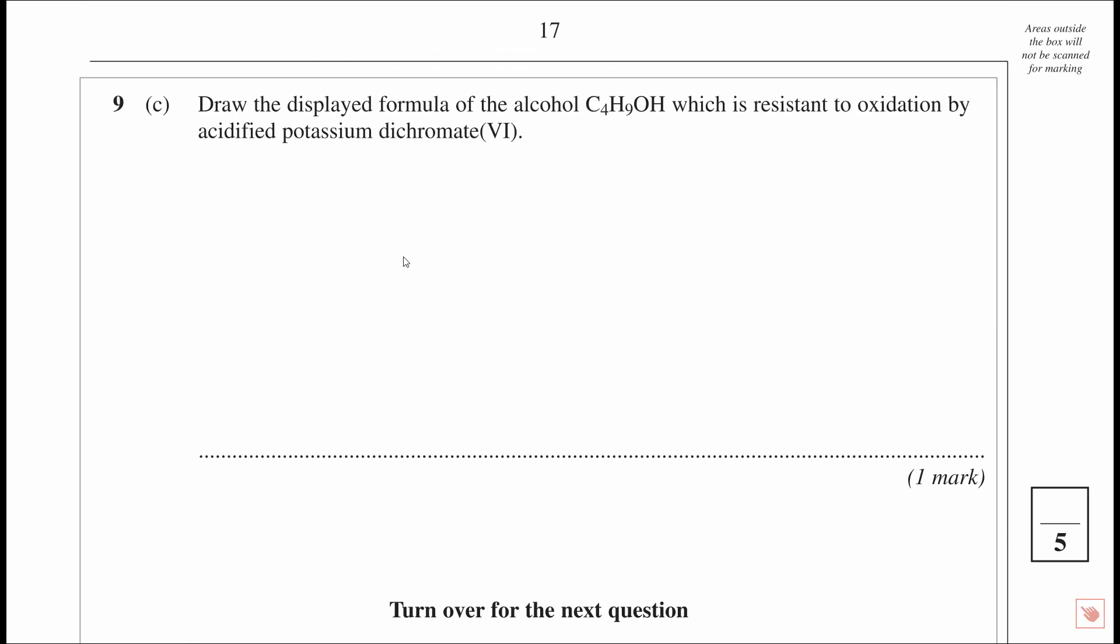I want to go on to this one. Draw the displayed formula - displayed very important, must do OH like that - draw the displayed formula of the alcohol C4H9OH which is resistant to oxidation by acidified potassium dichromate. One mark, easy mark. We're looking for a situation where we have three alkyl groups bound to our hydroxy group. Do make sure that you include all the subsequent bonds there. C4H9OH, let's have a quick check: one, two, three, four C's, good. H9: one, two, three, four, five, six, seven, eight, nine, ten - good, because the OH there. C4H9 and then the OH is there, good. One mark, nice.